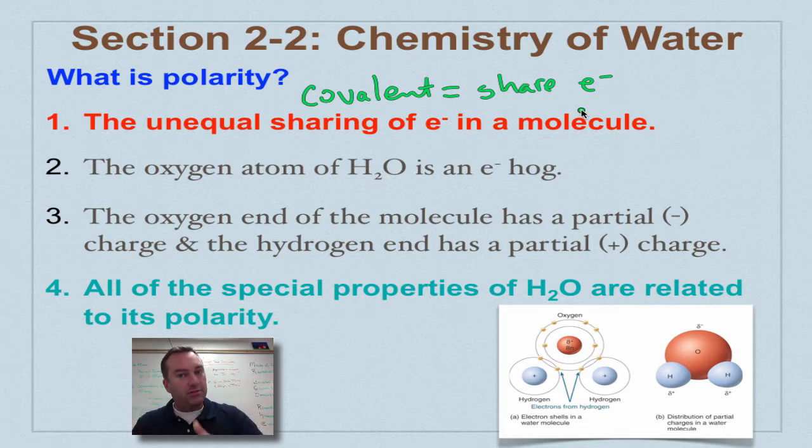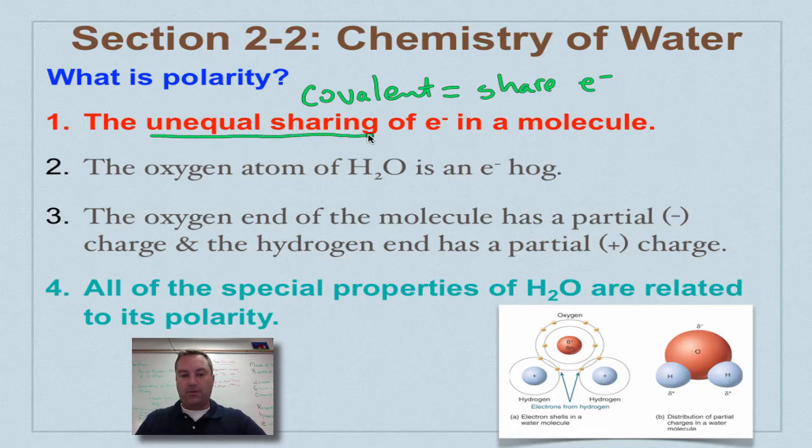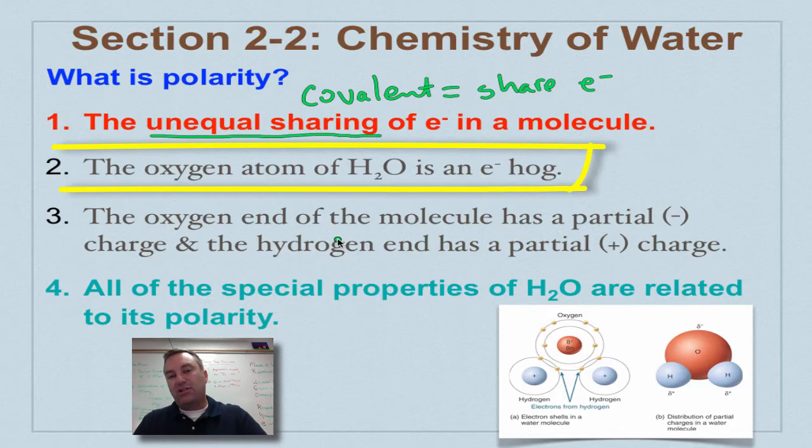So for hydrogen, it wants to have two electrons. And for oxygen, it wants to have eight. Remember the octet rule. But what happens is they don't share equal. And the reason that there's unequal sharing is that oxygen is an electron hog.